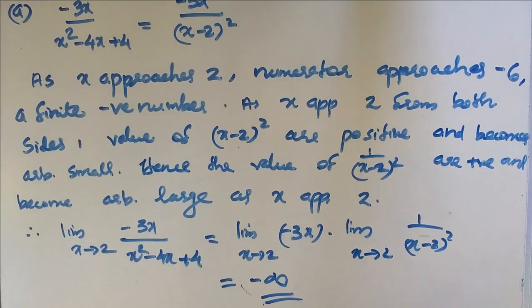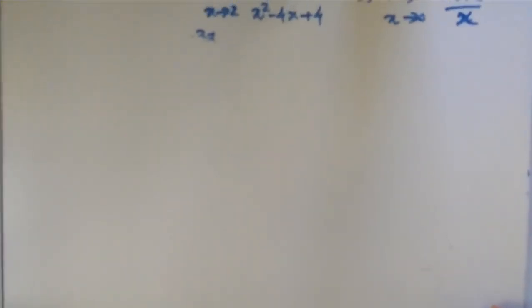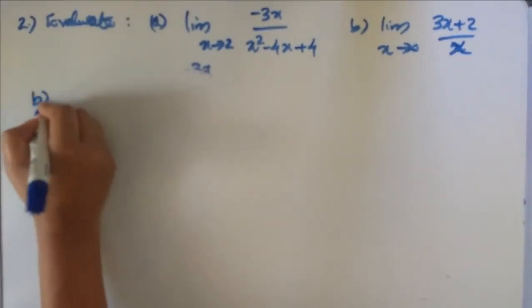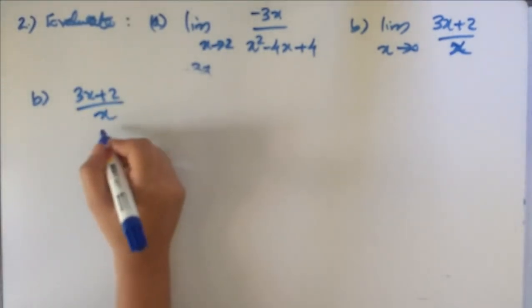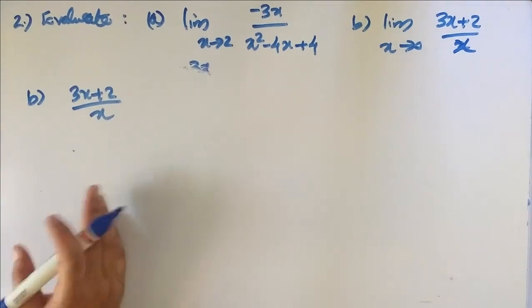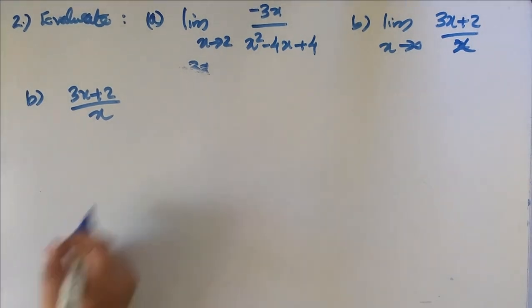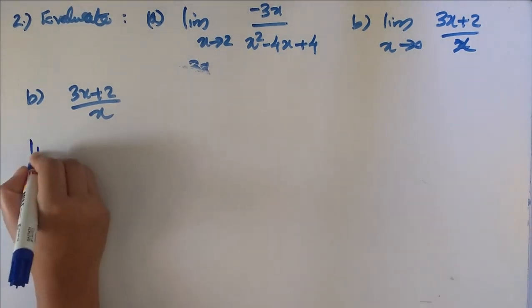Second question: limit x tends to 0 of 3x plus 2 by x. The denominator of the given function vanishes when x equals 0, so we cannot use the quotient rule. But using properties of limits, we get limit x tends to 0.